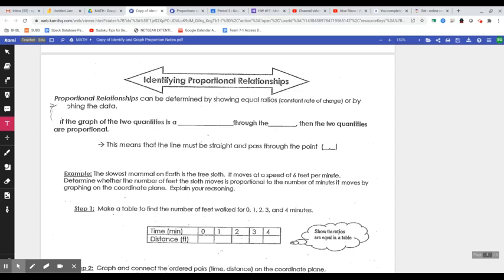Identifying proportional relationships. Same idea as last lesson, but this time it's going to be determining it on a graph. So it says proportional relationships can be determined by showing equal ratios, so that's the equal fractions, or by graphing.